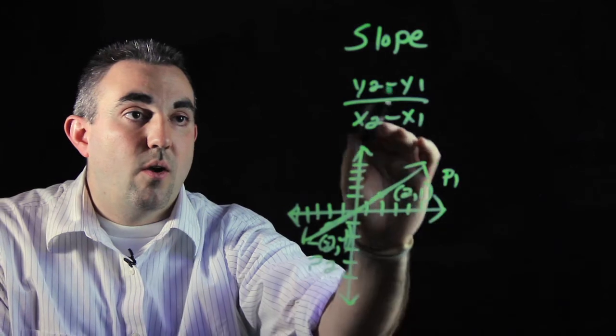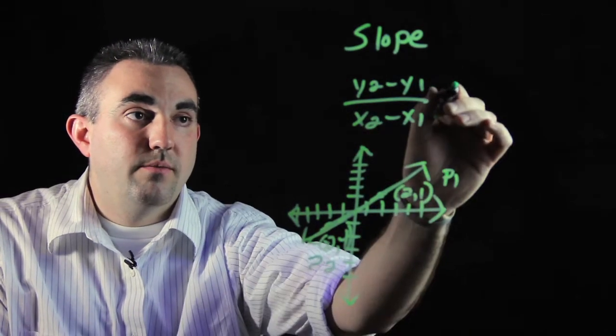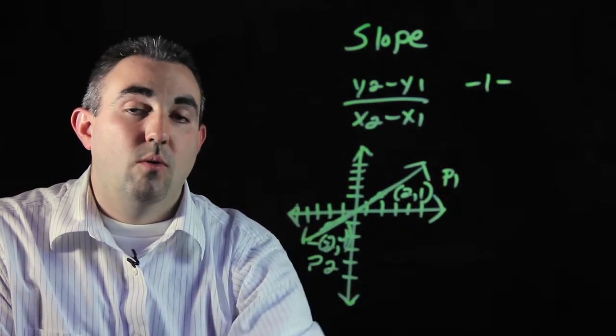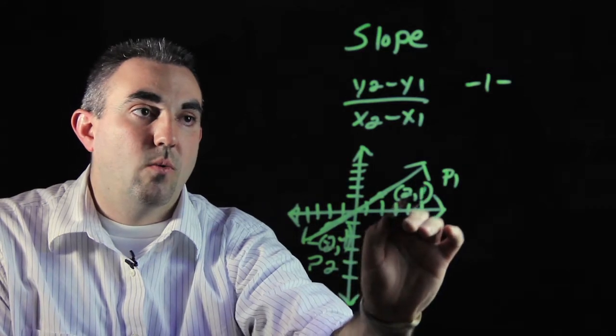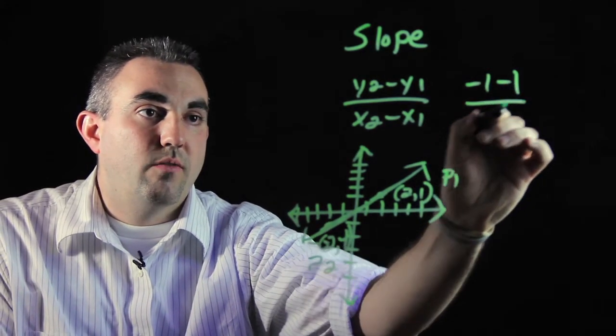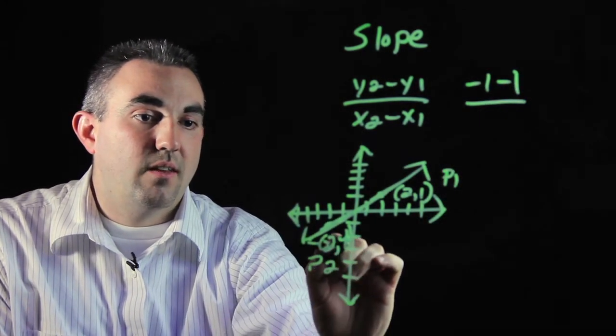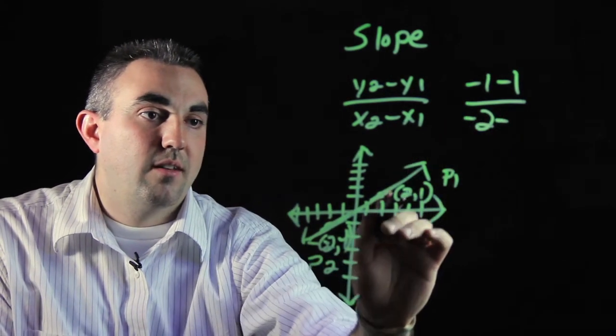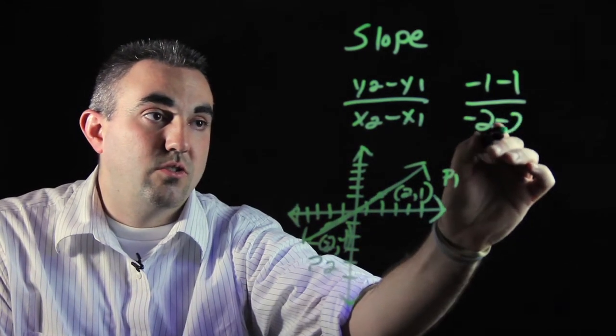So y2 would be negative 1, minus y1, which is 1, over x2, which is negative 2, minus x1, which is 2.